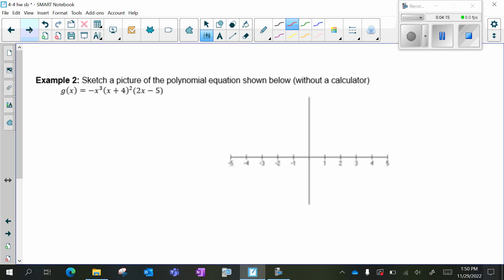The last example is going in the opposite direction. We want to sketch a picture of this polynomial without a calculator. So I'm given an equation. You want it to be in factored form. This is already in factored form, so I can find my zeros.